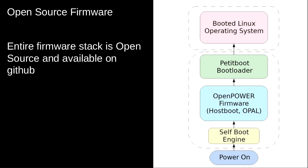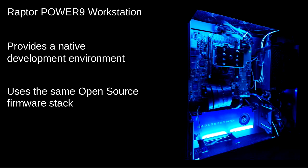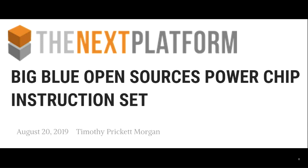We've been doing a lot of work around opening up our software stack over the last years. As we came to that stage, we were running out of things to open source. There is a nice developer workstation — they took our Power9 boxes and put it into a desktop system, so you can have a native development environment. It uses the same open source firmware stack. What happened in August? We're going to open source the hardware. That was the next logical step.